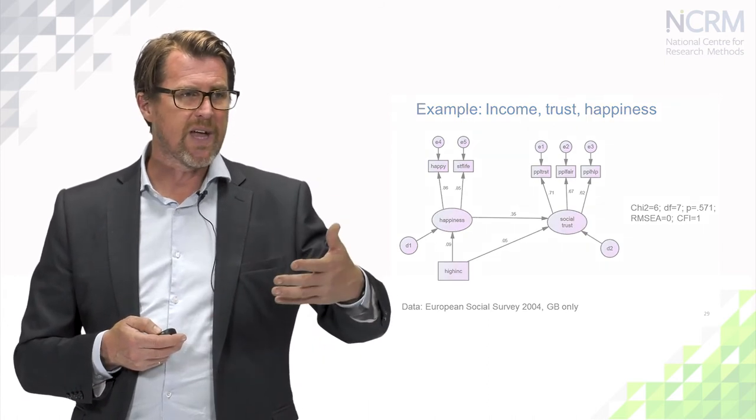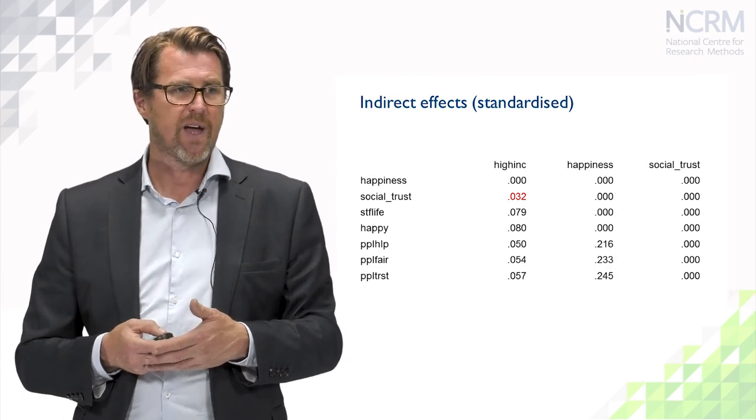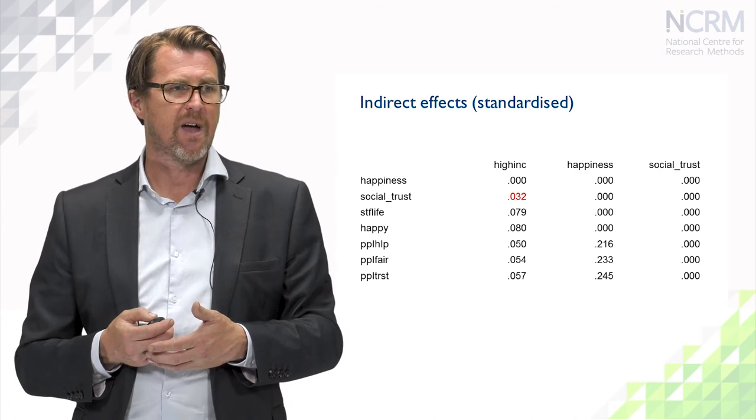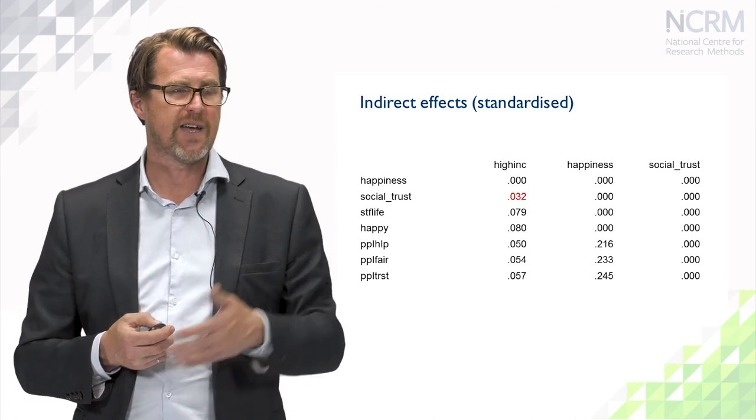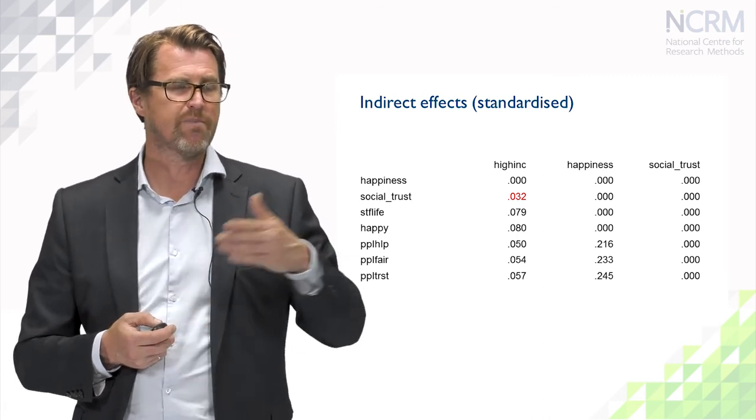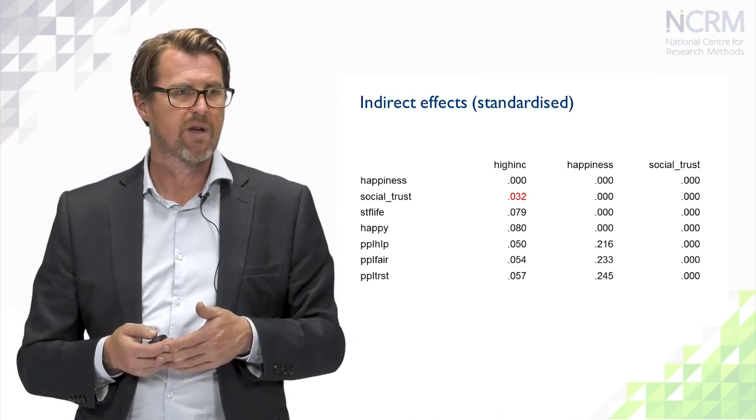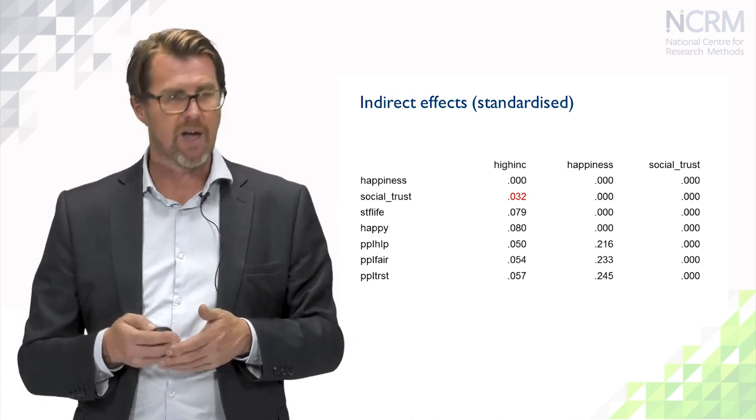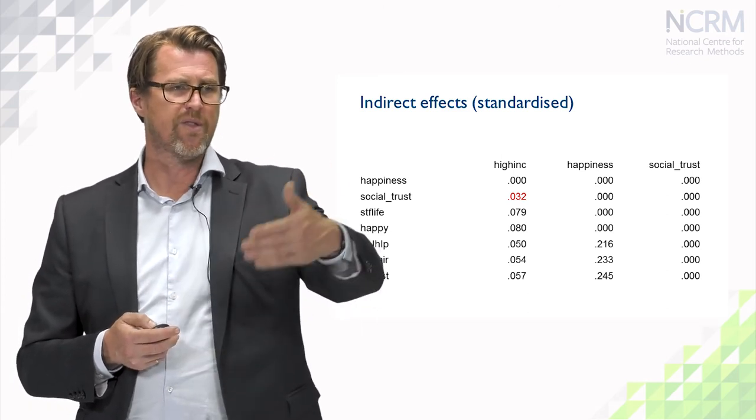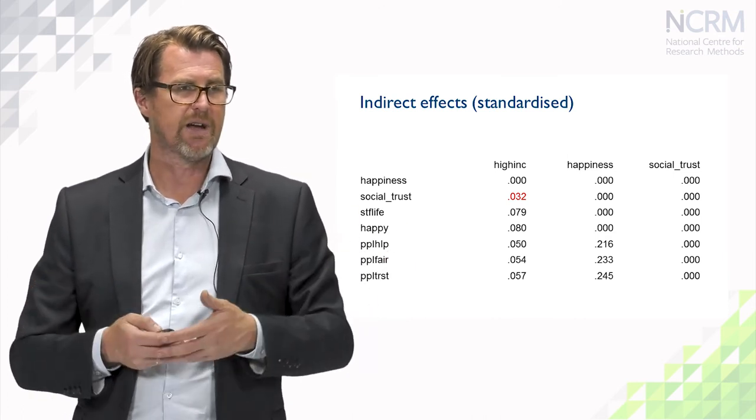If we do that, we get a figure of about 0.032, which if you look at this slide here, you can see this is some output from Amos software. And you can see there that in red, the indirect effect of the column variable, which is high income, on the row variable, which is social trust, is 0.032, which is the product of those two coefficients to give you the indirect effect. And you can see that all of the possible path estimates are provided there directly in the output.